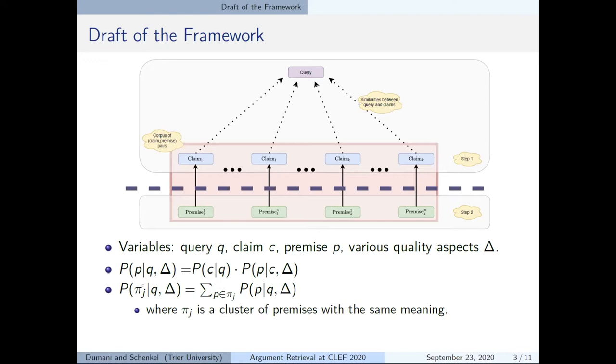And since we want to show a user a premise with the same meaning only once, we cluster similar premises. And this clustering also increases the relevance of the cluster by summation. Please note that while we only sketched the framework here you will find detailed descriptions in the paper. For example there you can read the explanation of clustering of premises by their meaning which I unfortunately have to skip due to time restrictions.